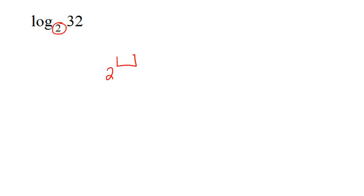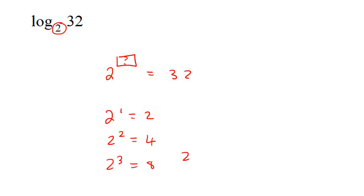Here's the next one. This says: 2 to the power of what gives us 32? We know that 2 to the 1 is 2, 2 to the power of 2 is 4, 2 to the 3 is 8, 2 to the 4 is 16, and 2 to the power of 5 is 32. So this answer is 5.